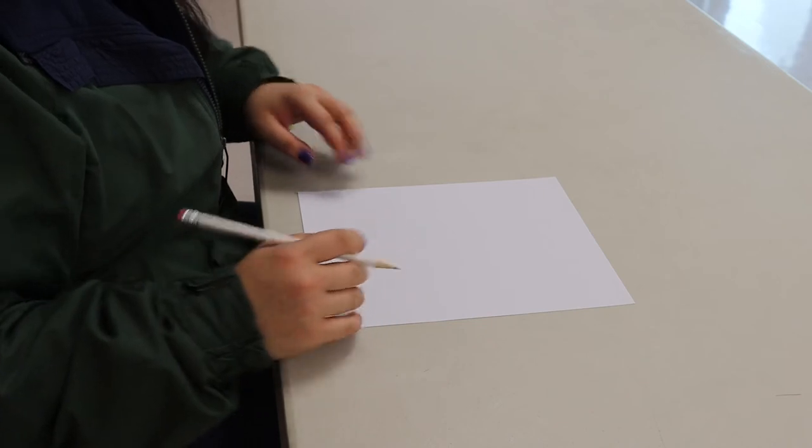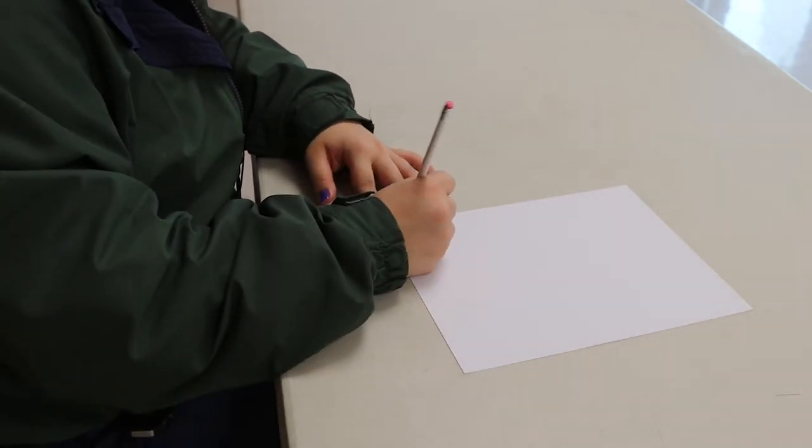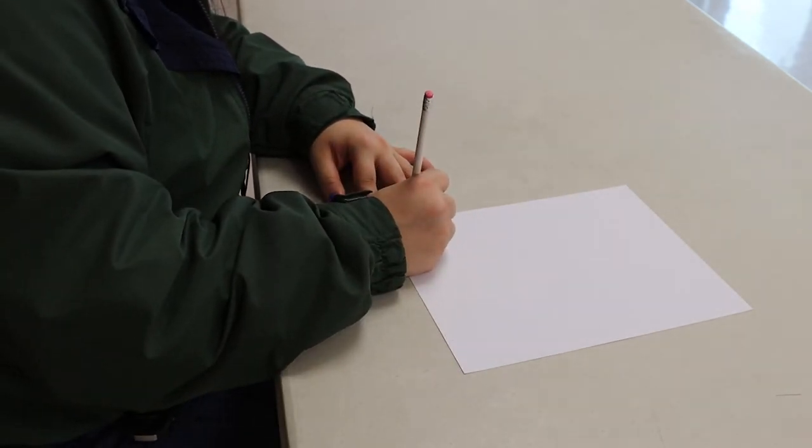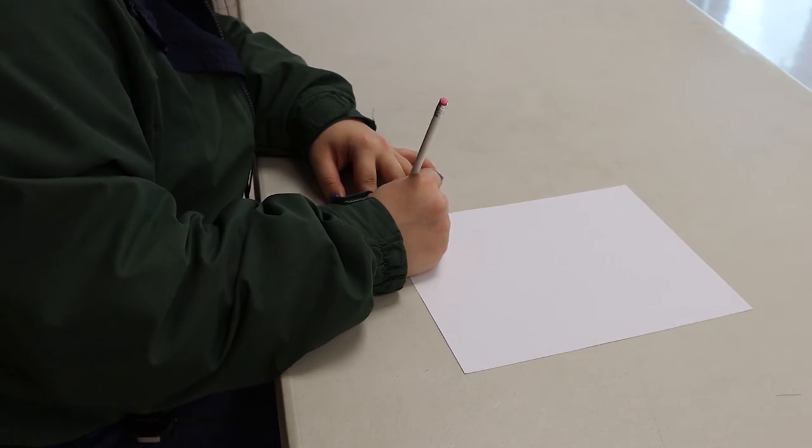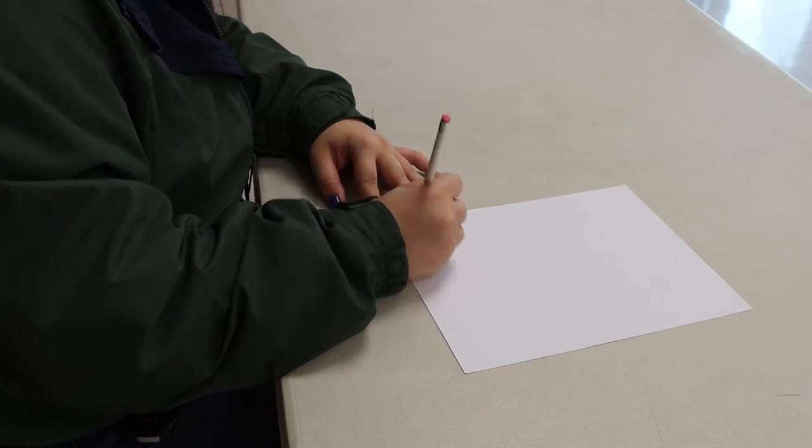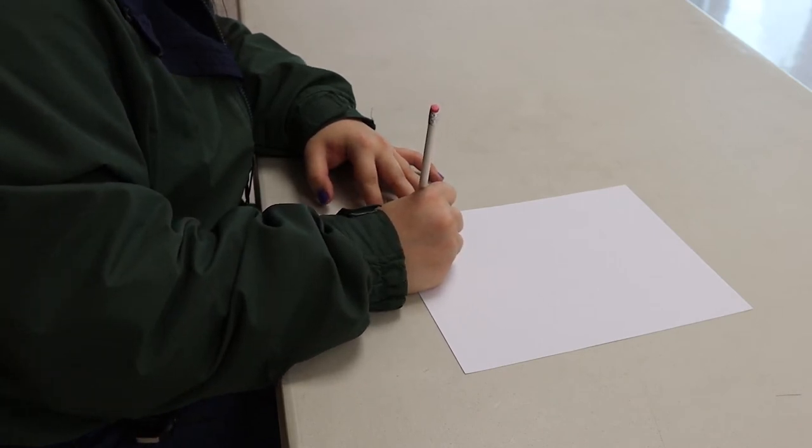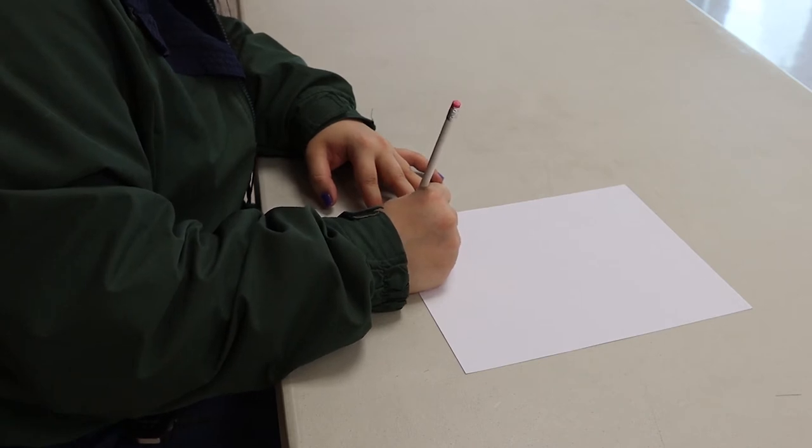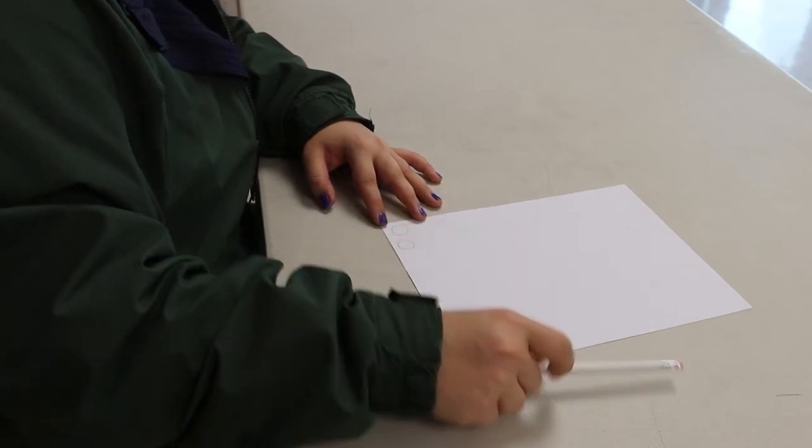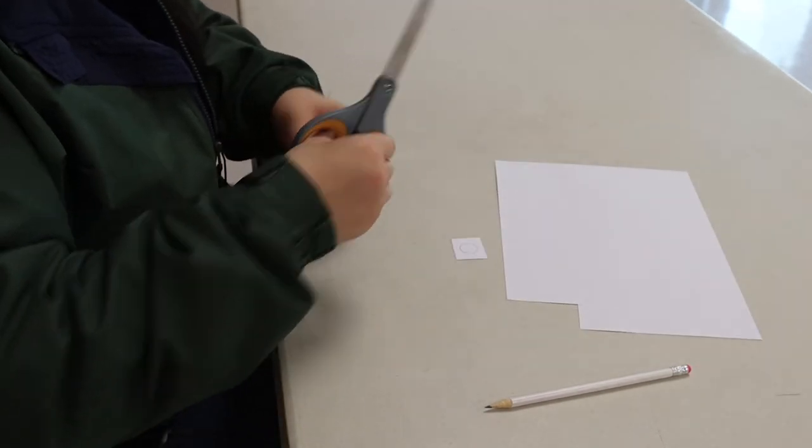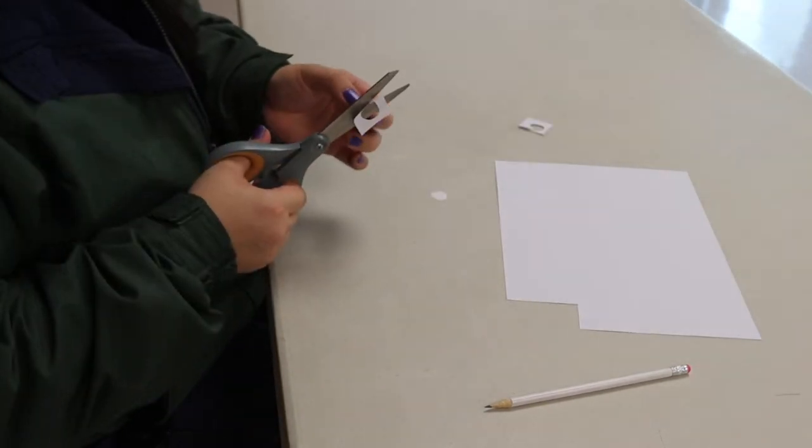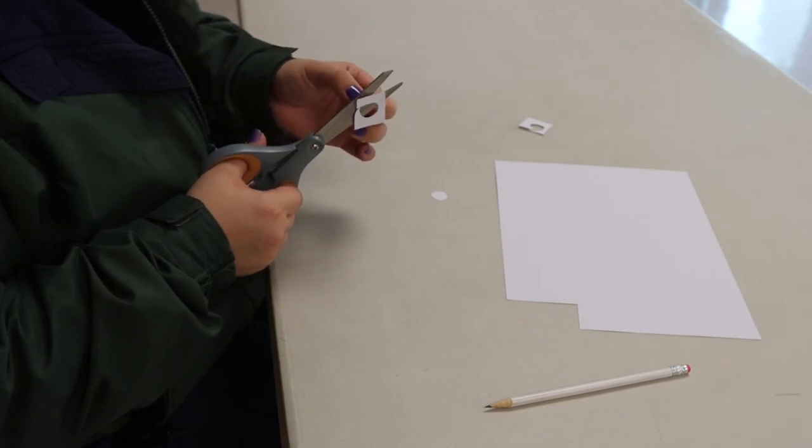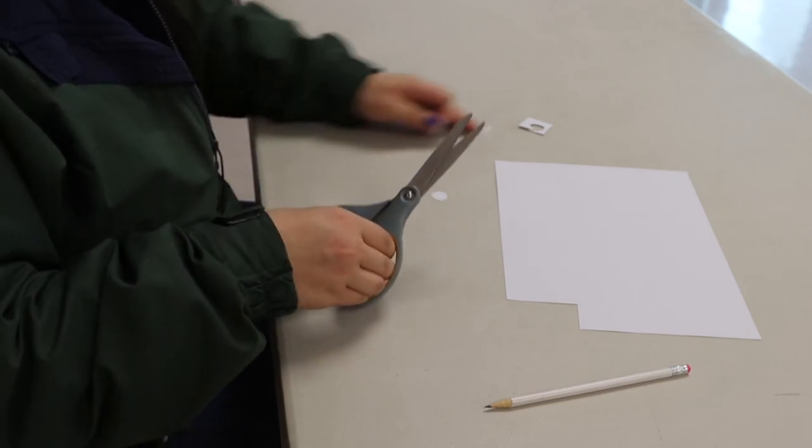Now we're going to take our white piece of paper and our pencil one more time and we're going to draw two circles for eyeballs. You can make these any shape you want. I'm just going to do two circles and we're going to cut those out. Now I'm going to take the black marker again and put little dots in the center.